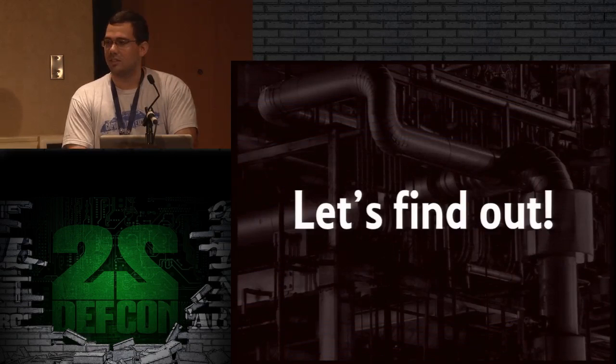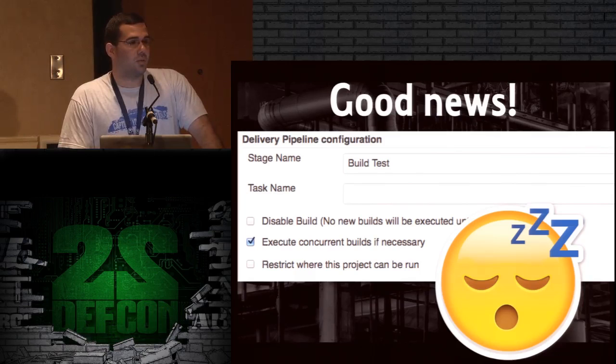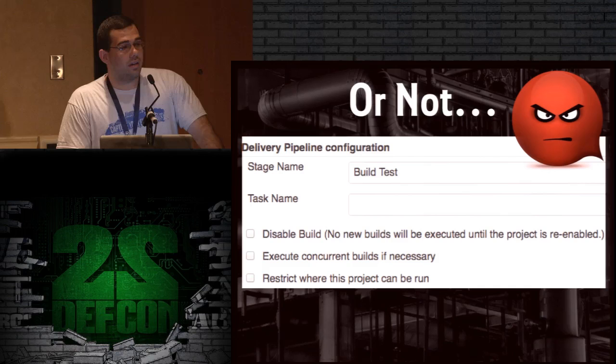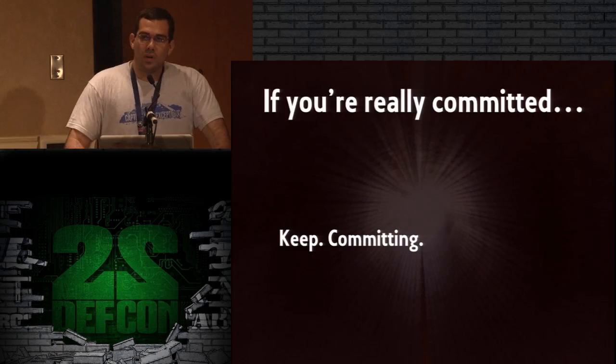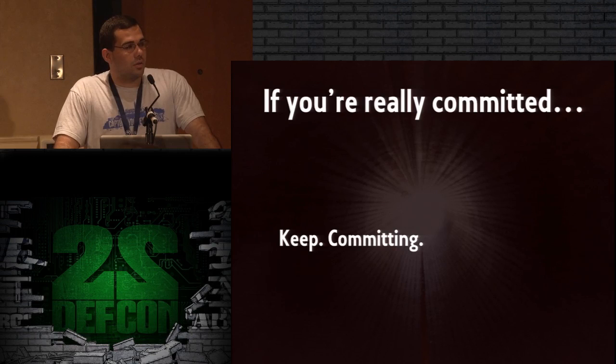There is a catch to this technique: this config file is only stored on the master node of Jenkins. So if builds are allowed to run concurrently, that's good news for us — just add a sleep function to your malicious code to put nodes to sleep, and boom, you're back on master. If you're not allowed to run concurrent builds, you have to get creative — either keep committing, or use the compromised credentials to push to other repositories and trigger other builds on Jenkins.